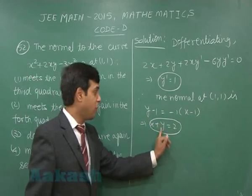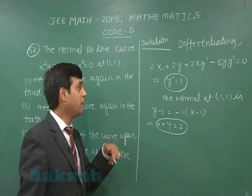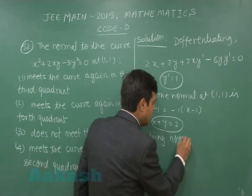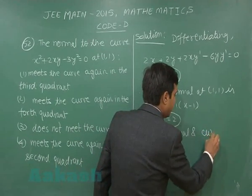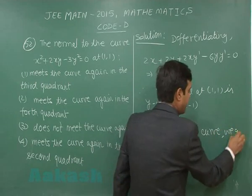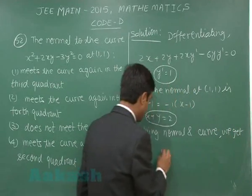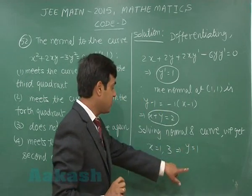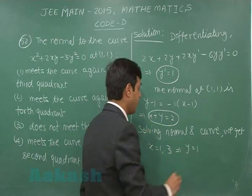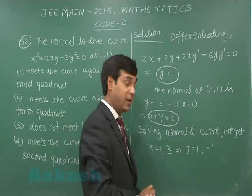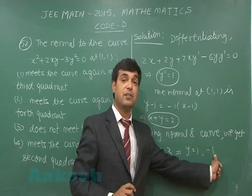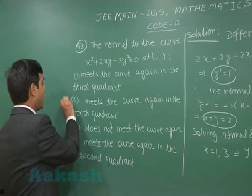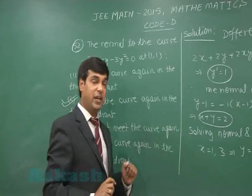Substituting y = 2 − x into the equation of the curve and solving, we get x = 1 and x = 3. When x = 1, y = 1 (the given point). When x = 3, y = −1, which lies in the fourth quadrant.